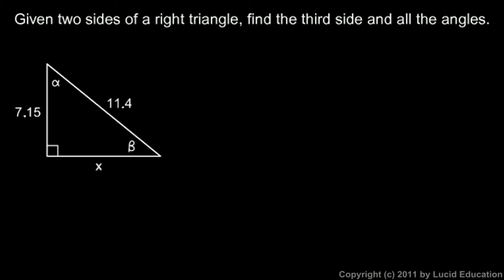And here's the first example. Given two sides of a right triangle, find the third side and all the angles. Well, it's a right triangle, so the Pythagorean theorem applies. And if you know two sides, you can find the third with the Pythagorean theorem. So let's do that first.